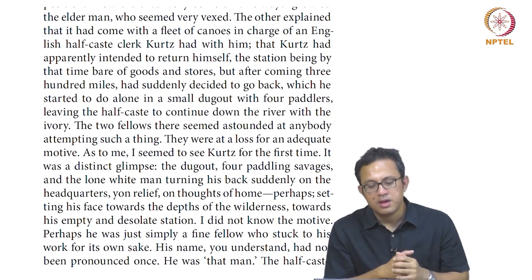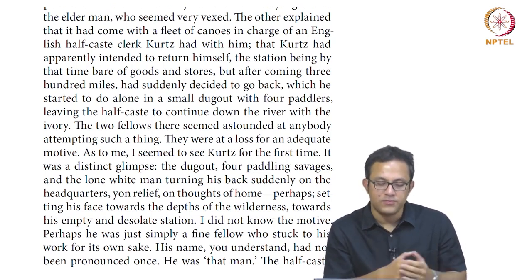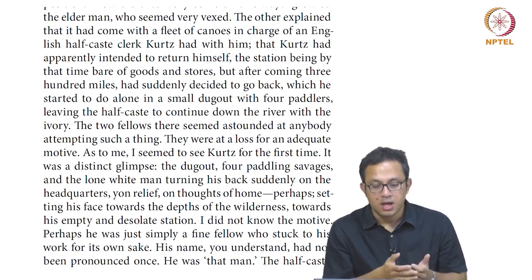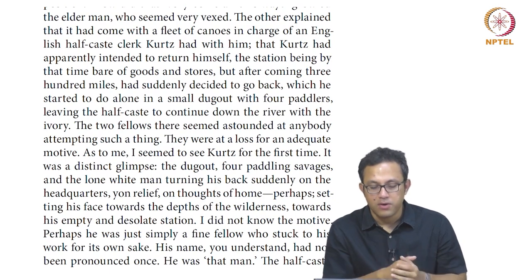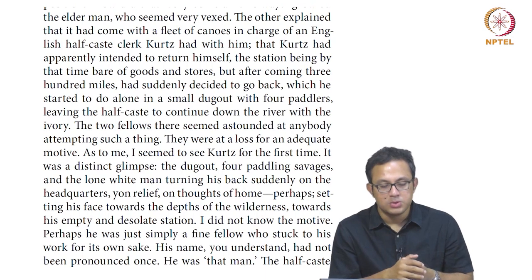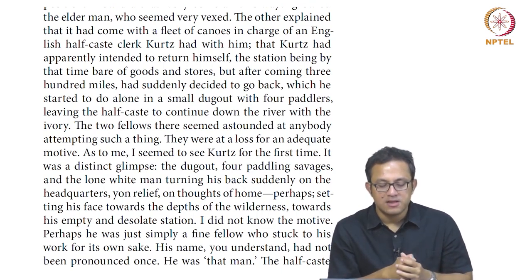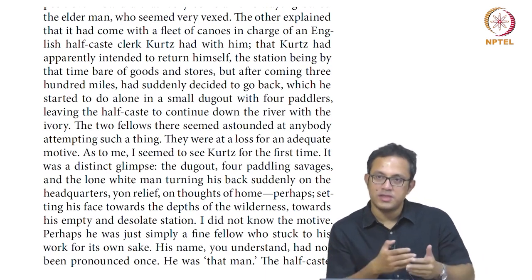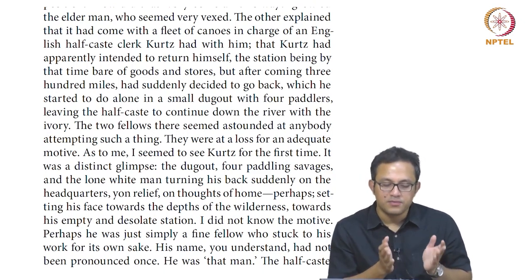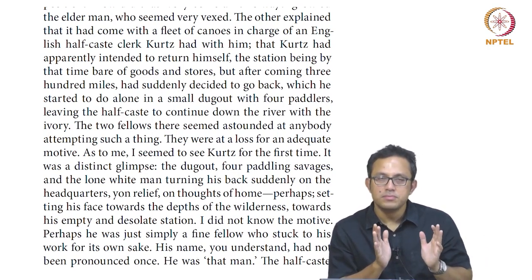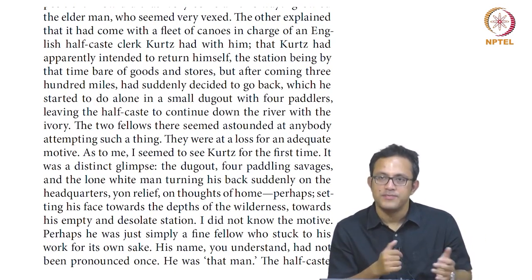Now let us look at the section where Marlow sees Kurtz for the first time and narrates that experience. 'As to me, I seemed to see Kurtz for the first time. It was a distinct glimpse — the dugout, four paddling savages, and a lone white man turning his back suddenly on the headquarters, turning his thoughts of home perhaps, setting his face towards the depths of the wilderness, towards his empty and desolate station.' The phrase 'a lone white man turning his back suddenly on the headquarters' is both a literal physical description of Kurtz's movement and a symbolic movement — Kurtz is basically what we call in spy fiction today a rogue agent.